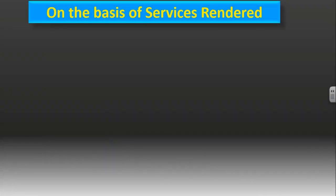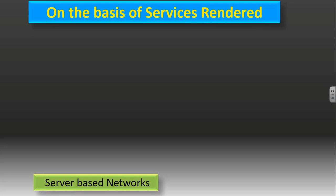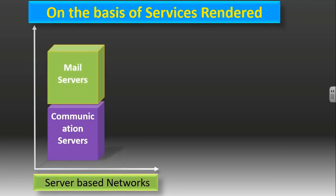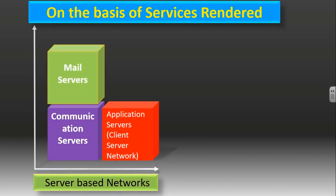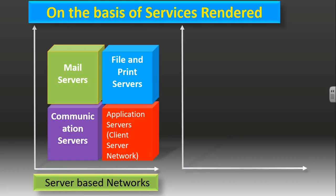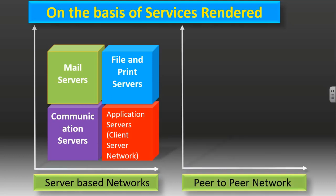On the basis of services rendered, we have two types of network. One is server-based networks, which includes communication servers, mail servers, application servers (that is client-server network), and file and print servers. The second one is peer-to-peer network.